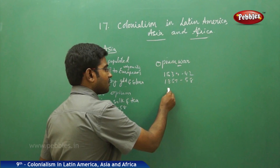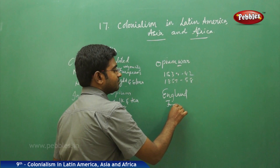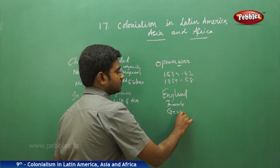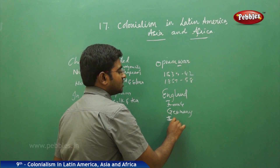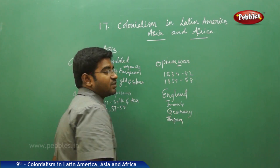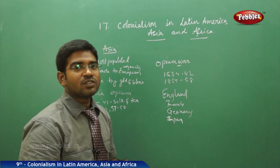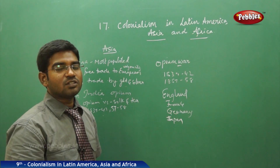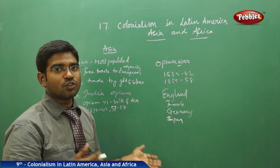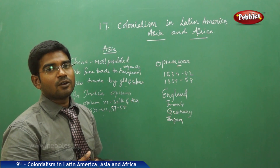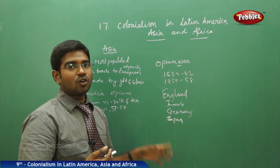In this way, England, France, Germany, and Japan in Asia were all able to control China. For namesake, China was not a colony of any nation, but economically and trade-wise it was completely controlled by multiple European nations as well as Japan. That is the reason why China is known as a semi-colony, not a regular colony.